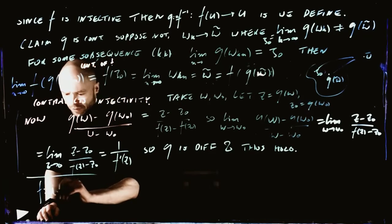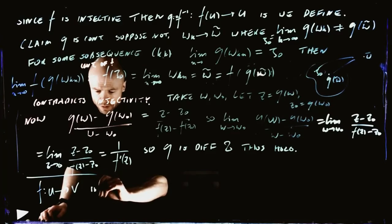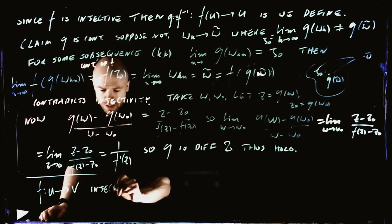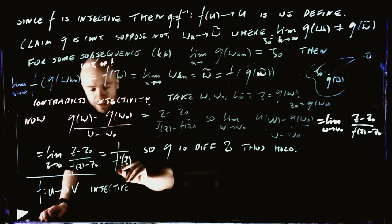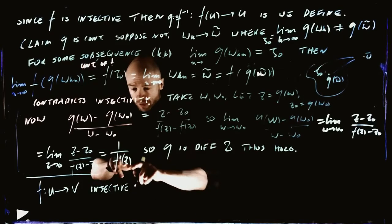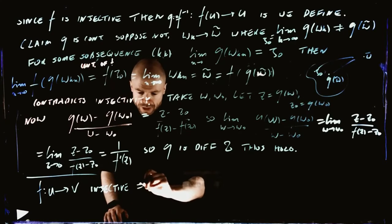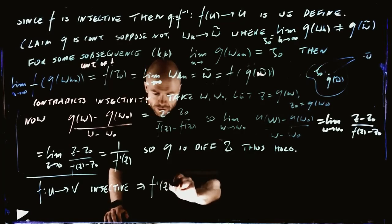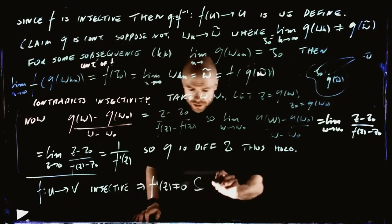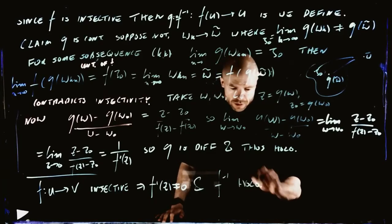F goes from U to V, injective. Since this is non-zero, this limit exists and is a finite number. So we're also using the fact that this is non-zero. This is injective, implies that F'(z) is not equal to zero, and F to the minus one is holomorphic.